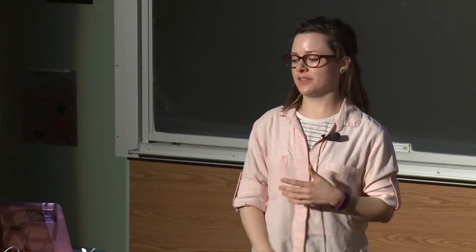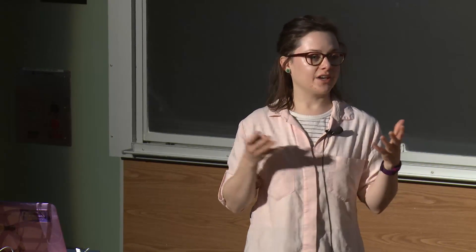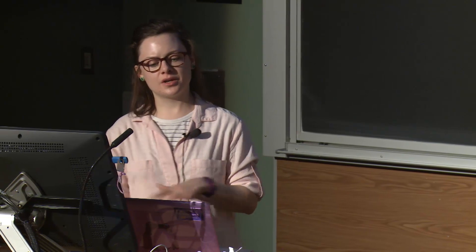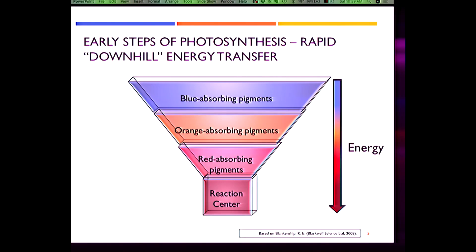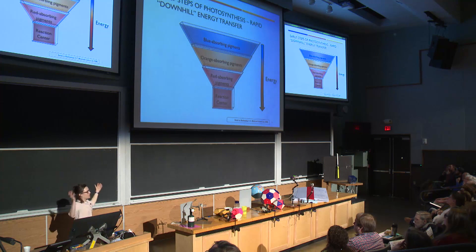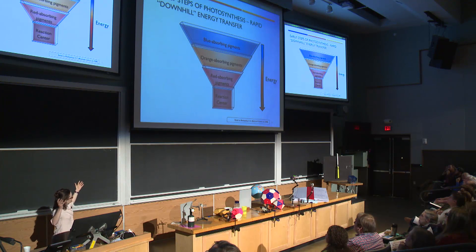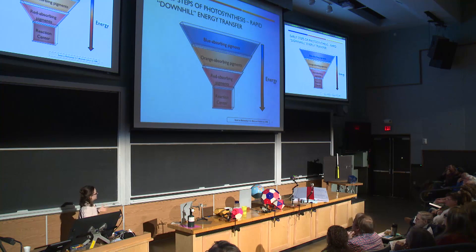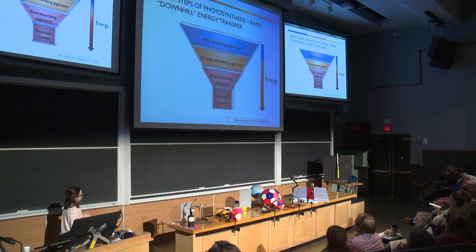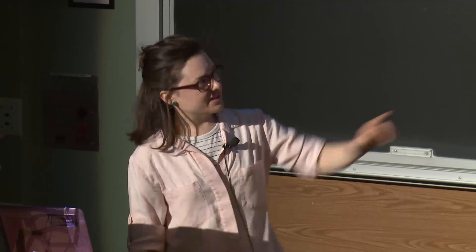One of the reasons we're interested in this process is because it has potential applications to the design of artificial solar light energy harvesting devices. In these early steps where light is initially absorbed by these organisms, it takes place in an architecture where there are a large number of high energy absorbing molecules — blue is a higher energy than a red photon — and they need to rapidly transfer that energy in a downhill energy scheme down to a low energy state that exists in a complex called the reaction center.